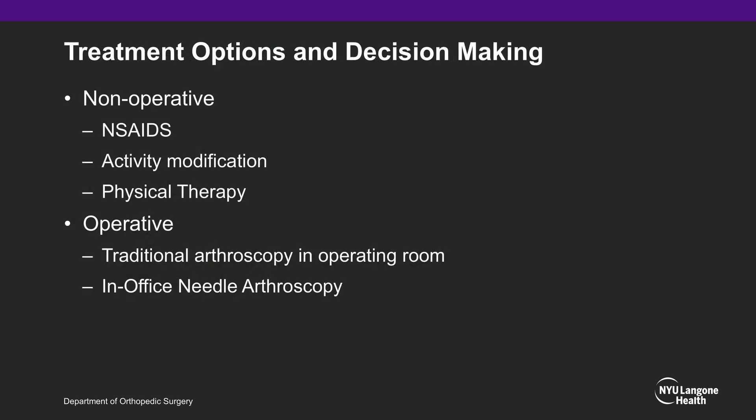In summary, this patient is a 22-year-old female presenting with anterior ankle impingement. Treatment options can be broken down into non-operative and operative modalities. Non-operative treatment options include inserts, activity modification, and physical therapy. Operative treatment options include traditional arthroscopy performed in an operating room as well as in-office needle arthroscopy.